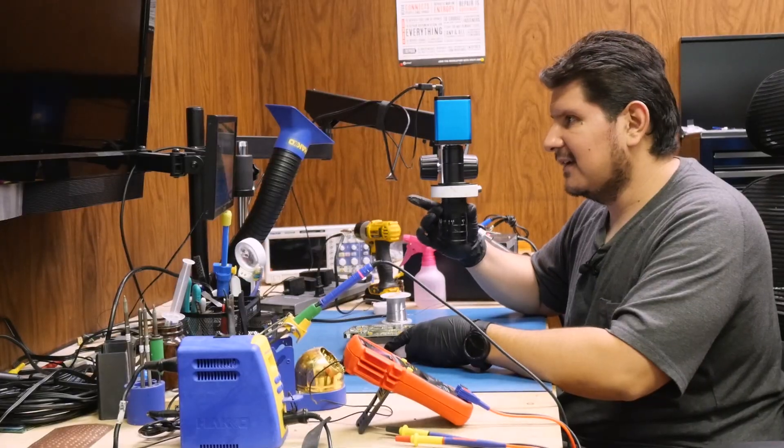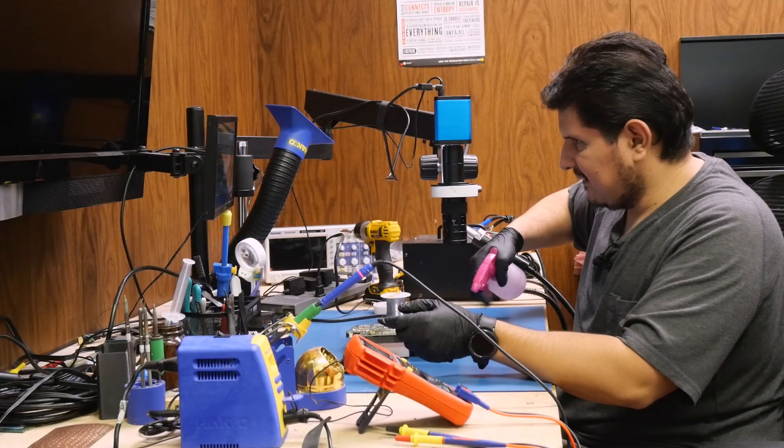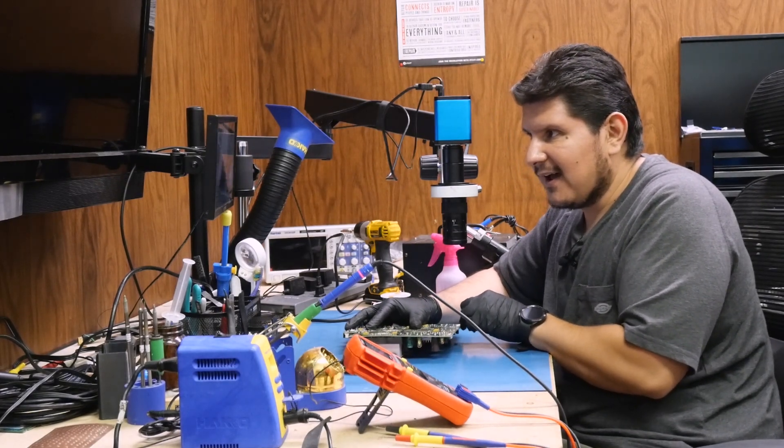And there is our clock capacitor. Pretty bad shape, if I may say so. One whole leg just completely disintegrated. Let's take a look and see how bad the trace damage is. Yeah, this corrosion is going to be pretty bad.